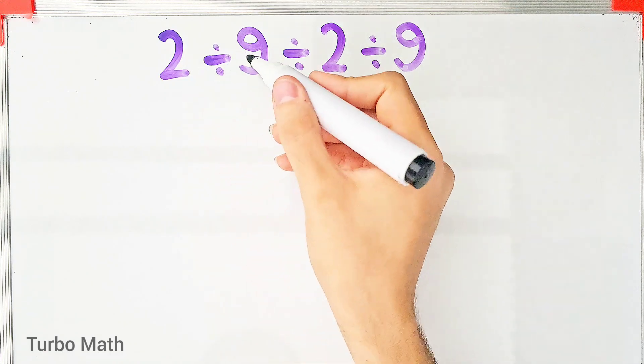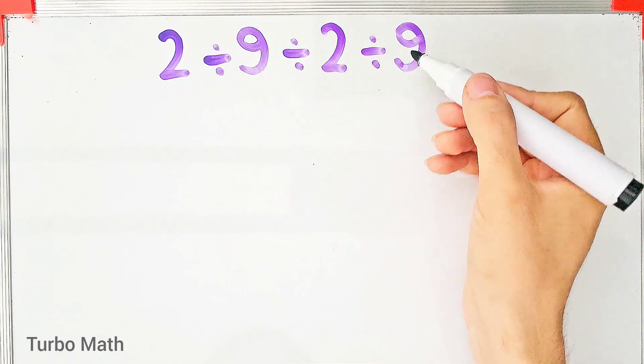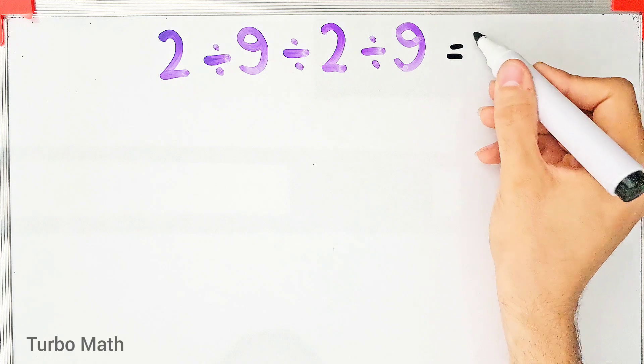2 divided by 9 divided by 2 then divided by 9. What is the answer of this question? Can you solve it?